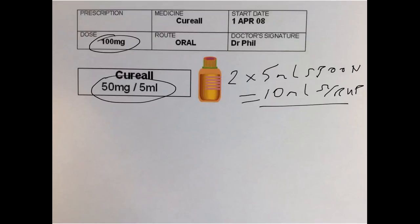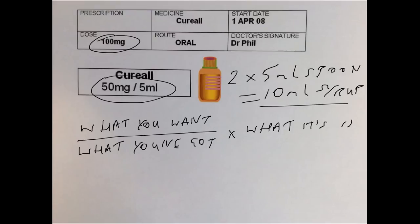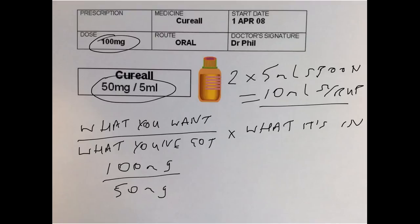There is another way to do this calculation: what you want over what you've got, times what it's in. What you want is the prescribed dose of 100mg. What you've got is 50mg, times what it's in — 50mg for every 5ml. Work out that calculation and it gives an answer of 10ml of syrup.